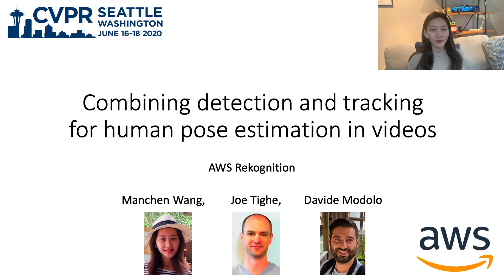Hi everyone. I'm going to present our paper called Combining Detections and Tracking for Human Pulse Estimation in Videos. My name is Mancheng Wang and this is a joint work with Joe and Davide at Amazon AWS Recognition.